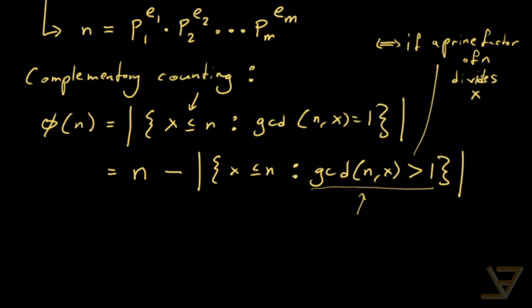And what that allows us to do is write that this is equal to n minus the cardinality of x less than or equal to n such that either p1 divides x, or P2 divides x, or all the way through to Pm divides x.